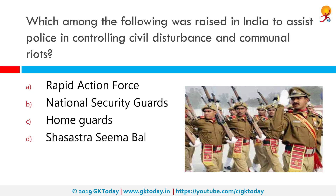Which among the following was raised in India to assist police in controlling civil disturbance and communal riots? The correct answer is Home Guards. The Indian Home Guards is an Indian paramilitary police force and is a voluntary force tasked as an auxiliary to the Indian police.